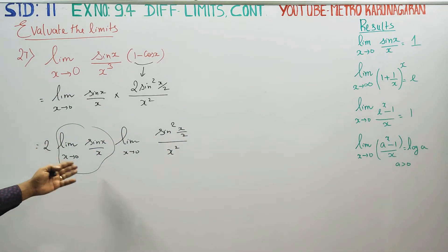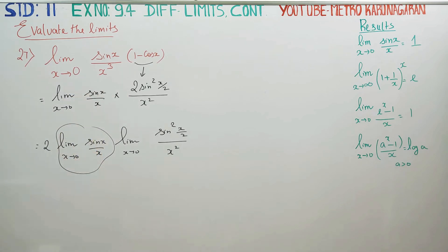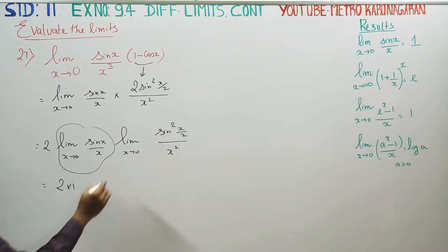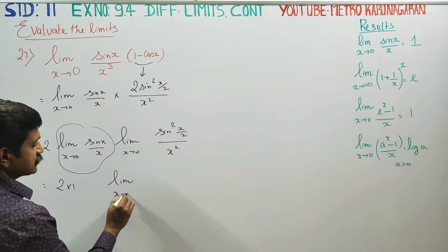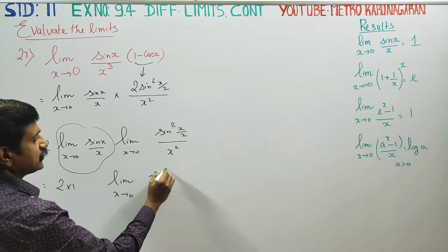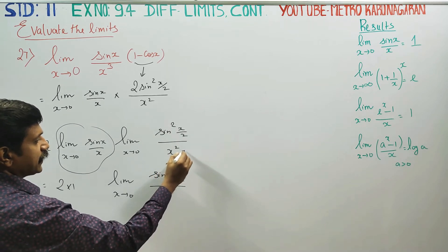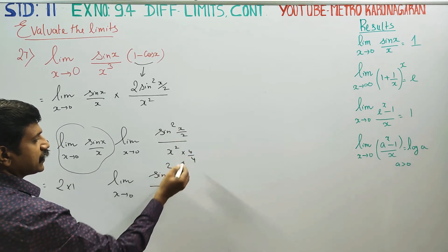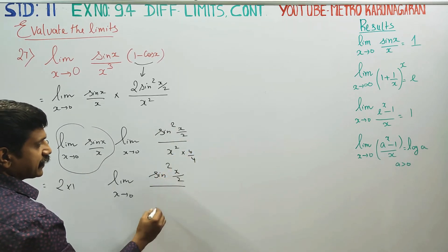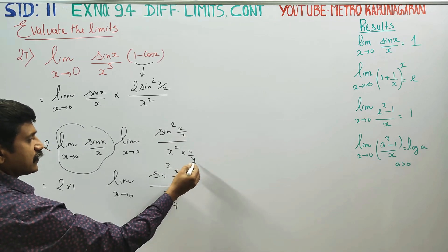Limit x turns to 0 of sin x by x gives 1 minus cos x. Then this is 2 into 1 minus cos x. Limit x turns to 0: sin squared x by 2, multiply and divide by 4 — giving 4 x squared by 4. Then x squared by 4, multiply by 4.